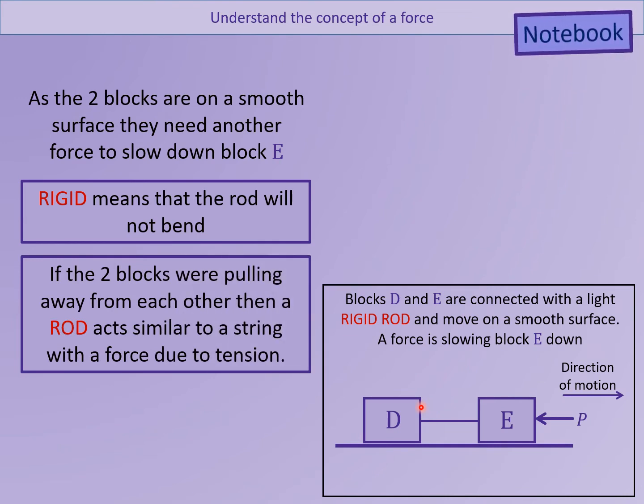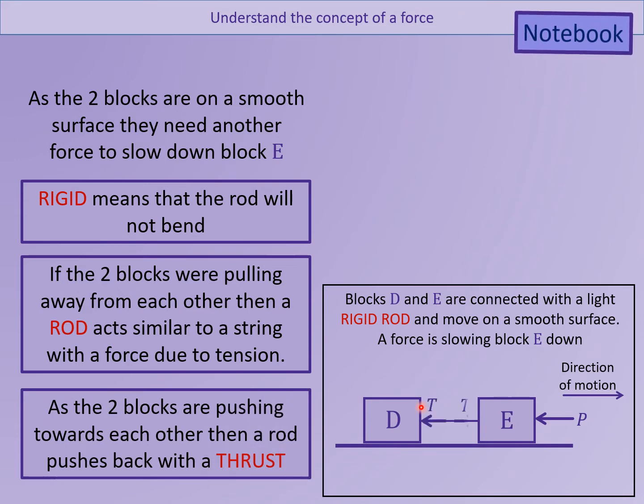If the two blocks were pulling away from each other, then the rod would act in a similar way to string, as we could consider the force to be a tension. However, as the boxes are pushing, the force in the rod would be considered as thrust. The forces act in the same way and are often denoted by the same letter T, regardless of whether it is a pushing or a pulling force.